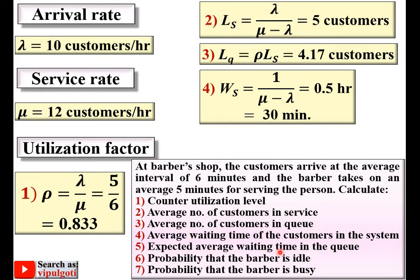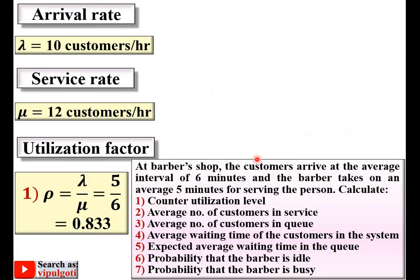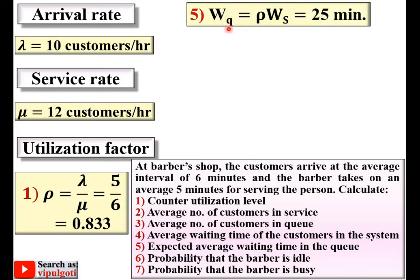Next, the expected average waiting time in the queue, denoted WQ. The formula is WQ = rho × WS. We already have rho and WS, so substituting gives WQ = 25 minutes.